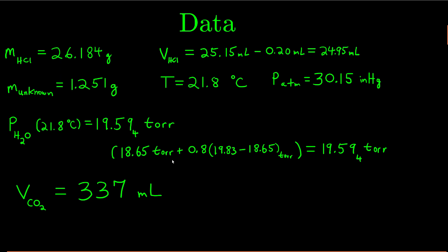What I did is basically took a weighted average of the two. I took the vapor pressure of water at 21 degrees Celsius, and because 0.8 is a tenth of the way between 21 and 22, I took 0.8 times the difference between the two vapor pressures — this is the vapor pressure of water at 22 Celsius, this is at 21. And this is the vapor pressure of water that I will use for my numbers. The volume of carbon dioxide that I collected was 337 milliliters — that's the volume of water, which is the same as the volume of carbon dioxide produced. I'll convert that to 0.337 liters when I need to.